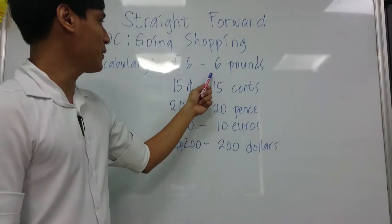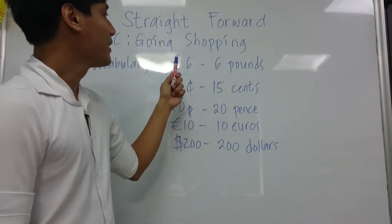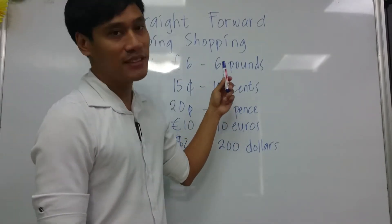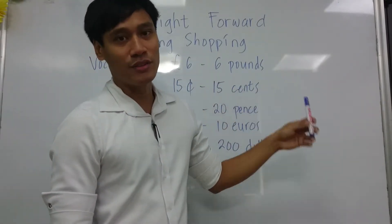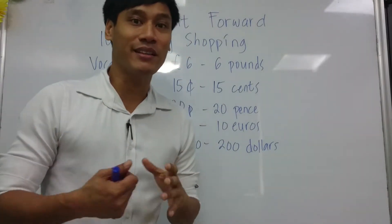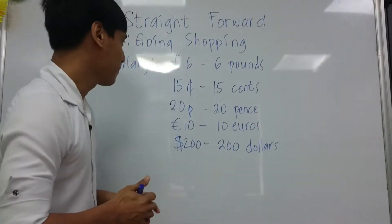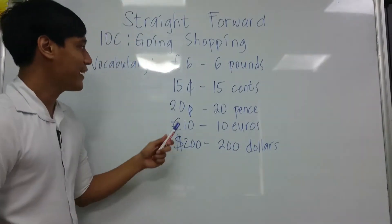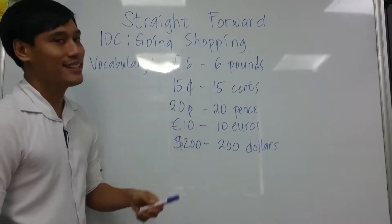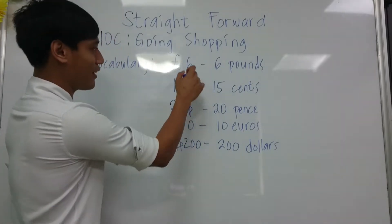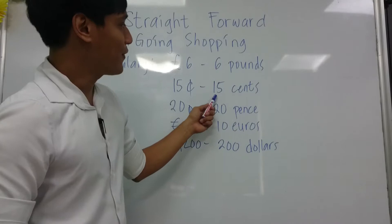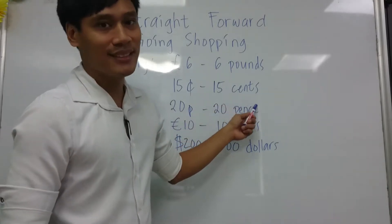Let's try to read this one: six pounds. Six pounds — it is European currency. Next is 15 cents. So C with a line there, so 15 cents.